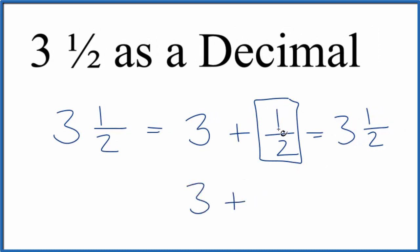So 3 plus, if we divide 1 by 2, that's 1 half, we get 0.5. 3 plus 0.5, that's 3.5, just like we found before.